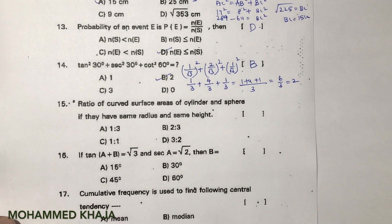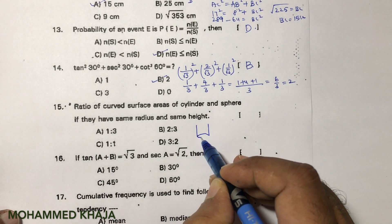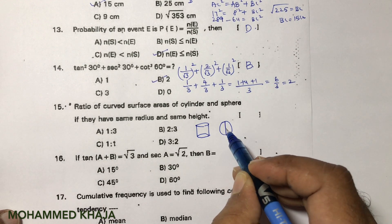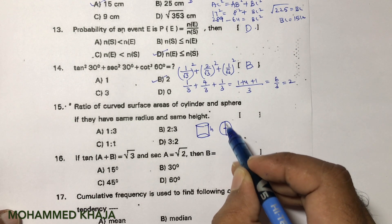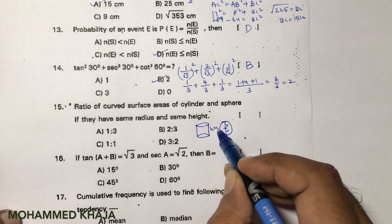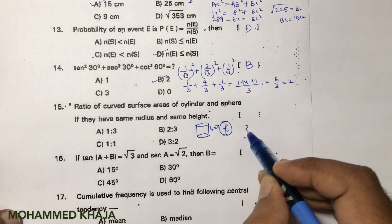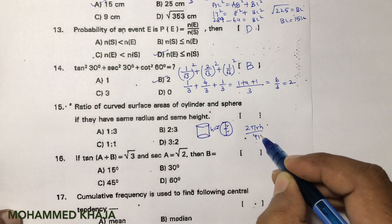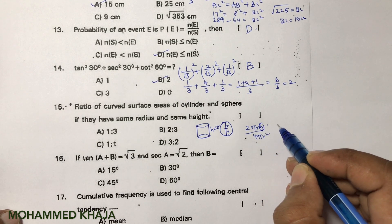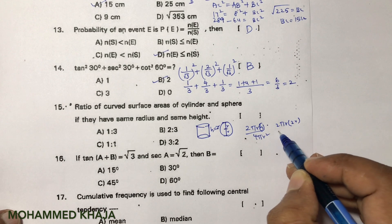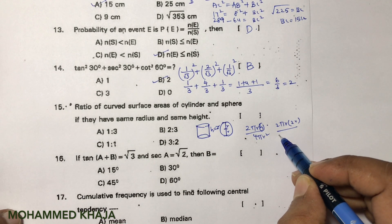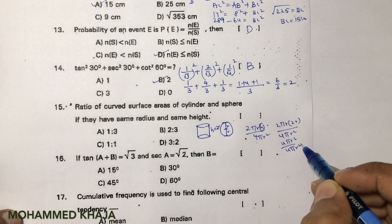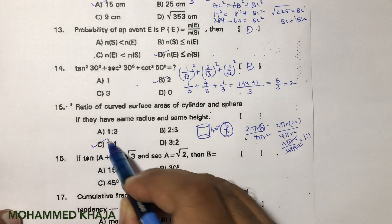Ratio of curved surface area of a cylinder to a sphere, given the same radius and height equal to diameter (h = 2R). CSA of cylinder = 2πRH = 2πR(2R) = 4πR². CSA of sphere = 4πR². So the ratio is 4πR² : 4πR² = 1:1. The correct option is C.